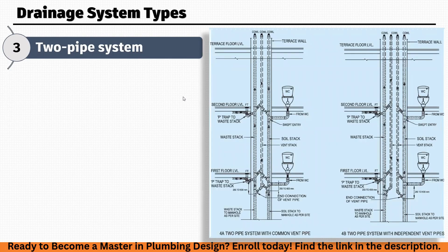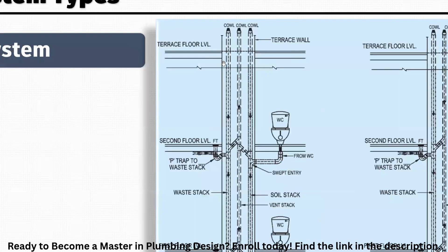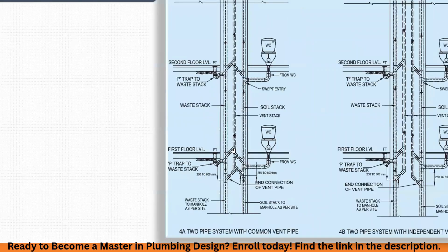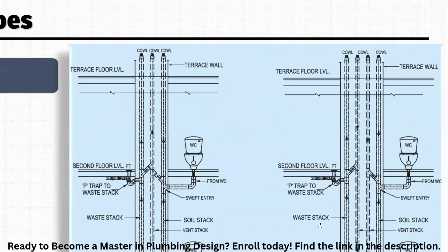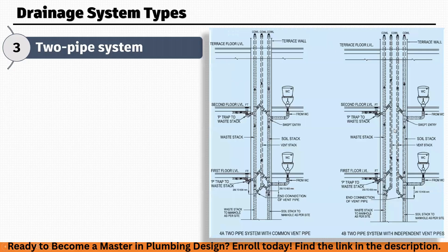The third one is the two-pipe system. We have two versions: one is with a common vent pipe. We have two stacks — one for the waste stack and one for the soil stack — and the vent of these two stacks is connected with the common vent pipe, which is the vent stack. Alternatively, there can be individual vent pipes for the waste and soil stack. The most commonly used system is with the common vent pipe because this leads to less pipework. This system is most common in the Middle East.